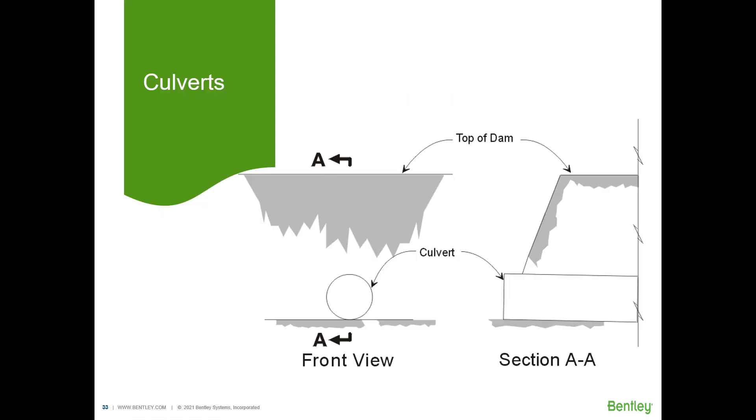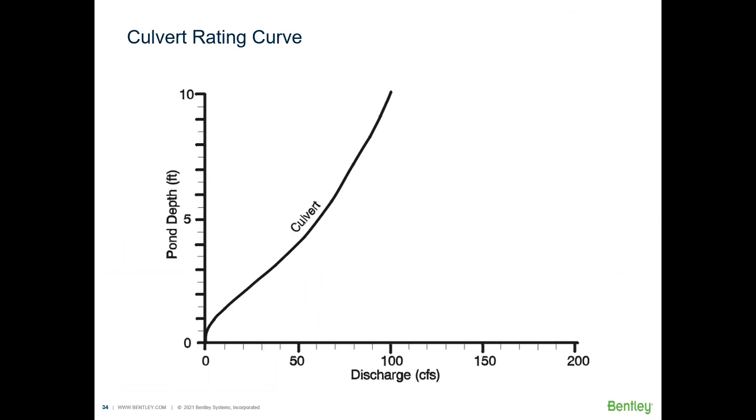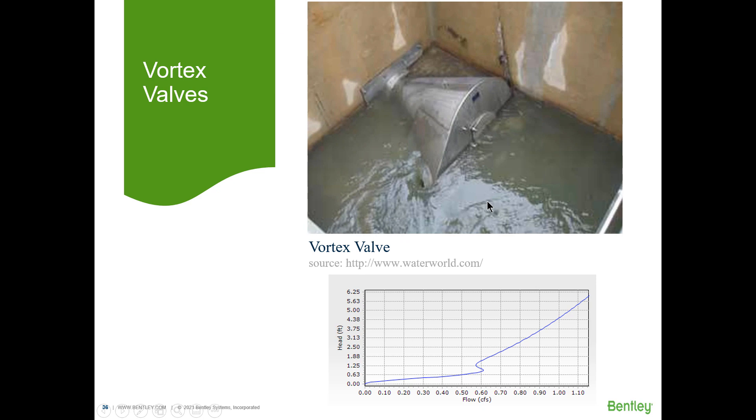Culverts. Culverts are similar to a pipe except they can be inlet or outlet controlled. We determine that based on the equations in the HDS5. The rating curve for a culvert tends to be steep but if you are using a large diameter for your culvert the larger the diameter the milder the culvert rating curve becomes.